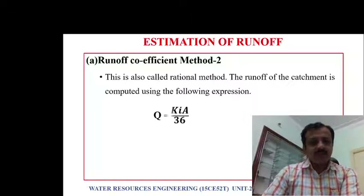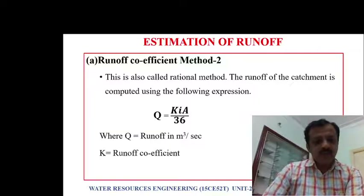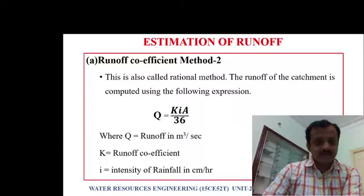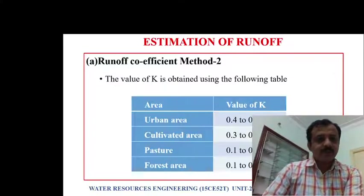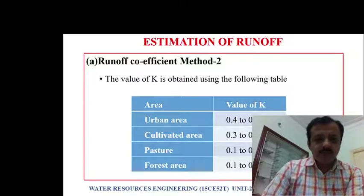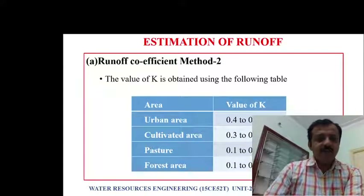The second method is called the rational method, using the formula Q = KIA/36, where Q is runoff in cubic meters per second, K is the runoff coefficient, I is intensity of rainfall in centimeters per hour, and A is area in hectares. The value of K varies: for urban area 0.4 to 0.8, cultivated area 0.3 to 0.7, pasture 0.1 to 0.4, and forest area 0.1 to 0.4.